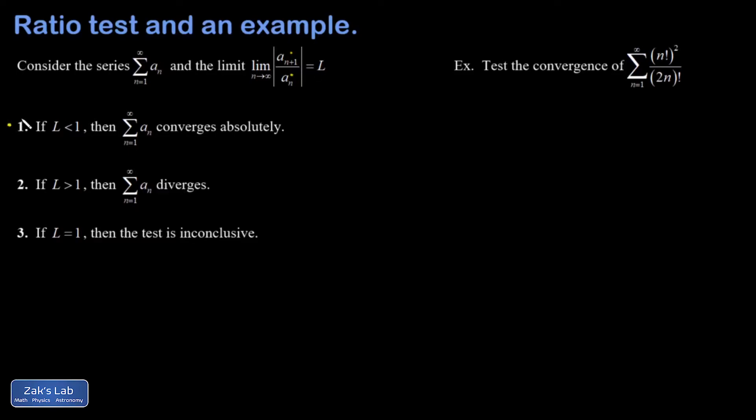If you end up with a limit less than 1, then it means the series converges absolutely. And if a series converges absolutely, it converges also in the ordinary sense.